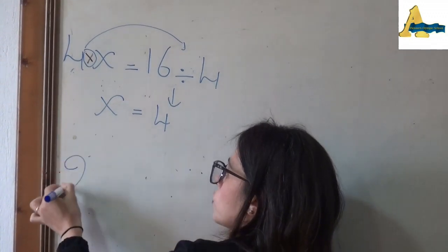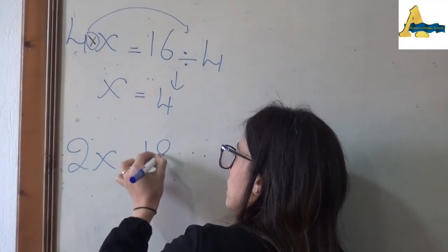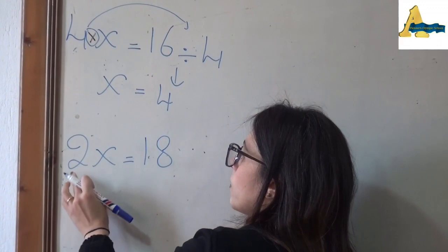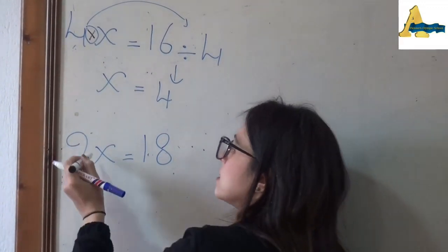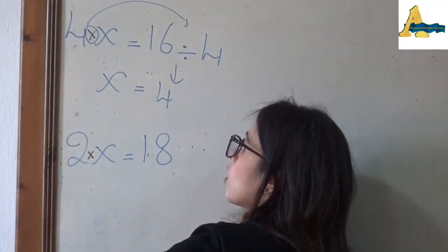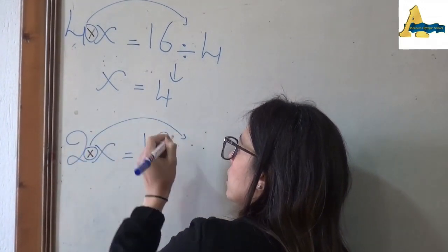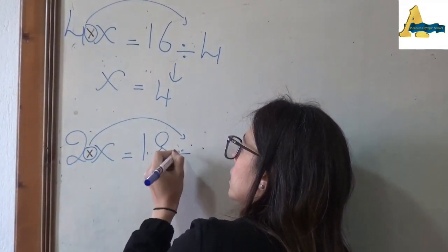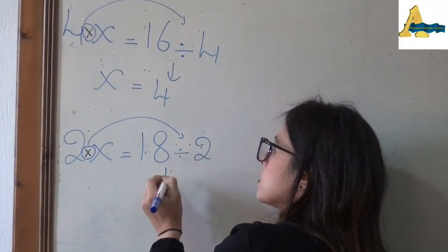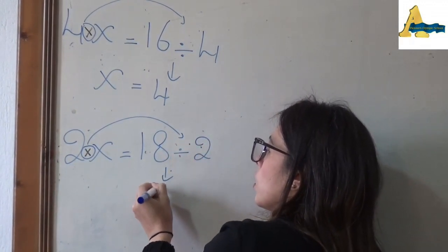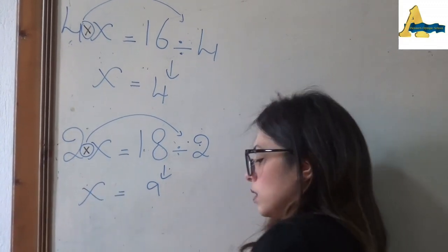Another example: 2x = 18. Again, the hidden sign between 2 and x is times. Times is going to go to the other side as divided. 18 divided by 2 equals 9, that means x = 9.